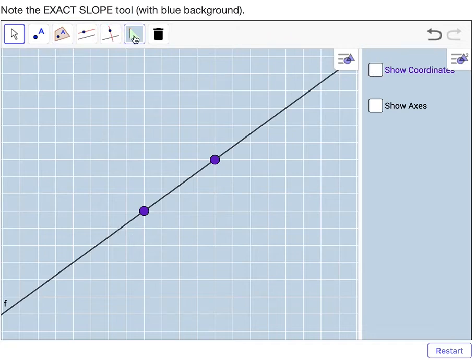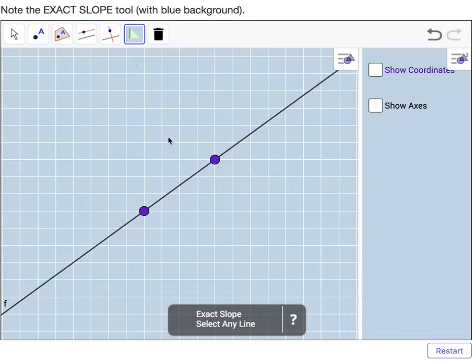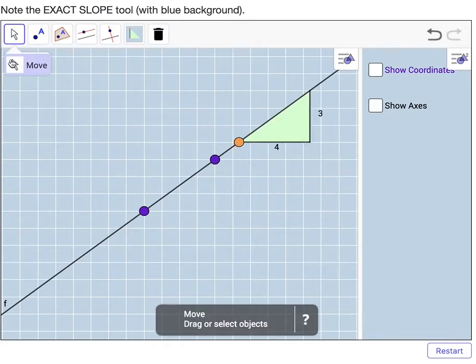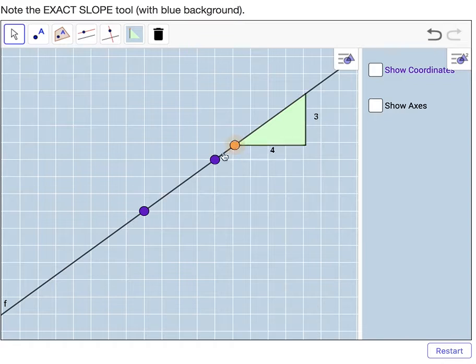Regardless, we can actually use this custom tool here, exact slope, and all you have to do is select a line. Once you do, it'll generate a slope triangle that helps yield the exact slope of the line. In this case, three-fourths.